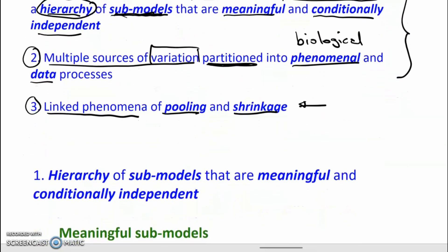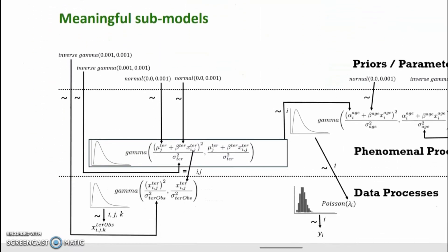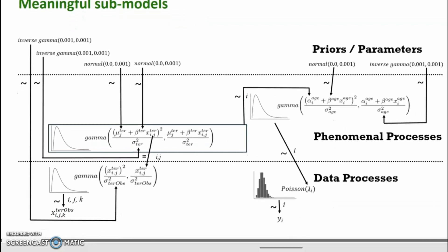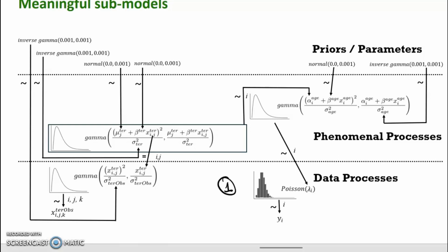Beginning with the idea that we've got meaningful submodels arranged in a hierarchy that are conditionally independent: we've got four of these meaningful submodels. Starting at the bottom, the number of observed offspring arise as random draws from Poisson distributions with a parameter which is the bird-specific fecundity. In the second submodel, the bird-specific fecundity arises from a gamma distribution which has as its mean a certain expression.